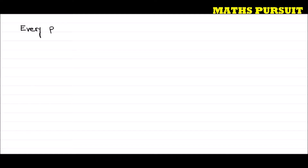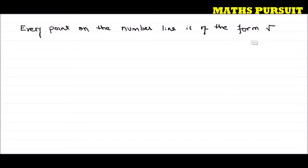Let us analyze this given statement. The question is saying that every point on the number line is of the form root m, where m is a natural number. Let us analyze whether this statement is true or false.